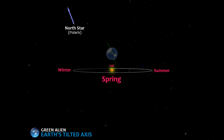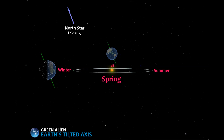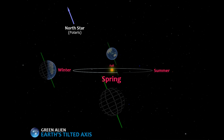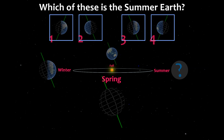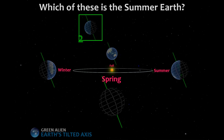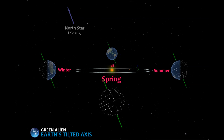Here's the Fall Earth — the North Pole points in the direction of the North Star. Here's the Winter Earth — the North Pole points in the direction of the North Star. And here's the Spring Earth — the North Pole points in the direction of the North Star. We've got one left. Want to guess what the Summer Earth looks like? The northern rotation axis, and the North Pole, points in the direction of the North Star.